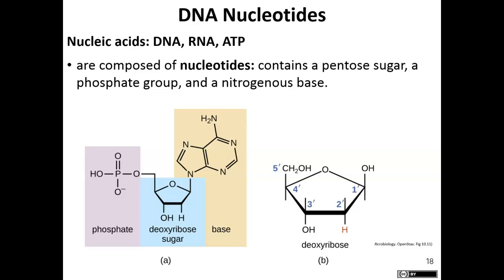Nucleic acids are composed of what we call nucleotides — those are the monomers. A nucleotide contains a nitrogenous base, a sugar (for DNA it's deoxyribose, for RNA it's ribose), and a phosphate group.